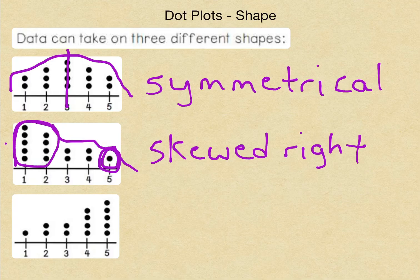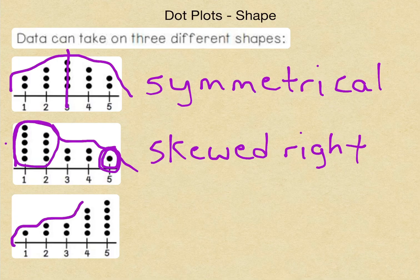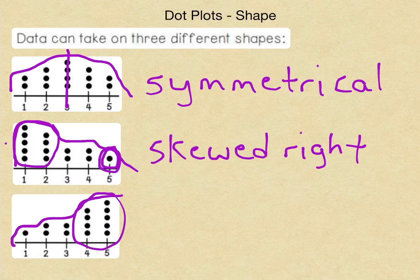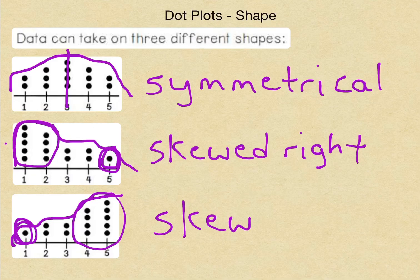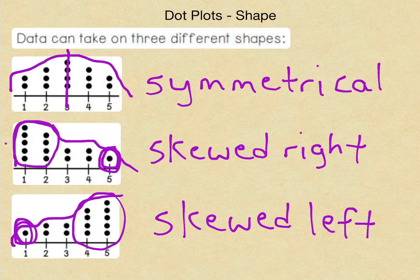Now, our bottom one is actually the opposite of that top one. When we trace around here, we actually start with our tail. And then we get to the majority of our points, which are on the right side. So that means this one over here on the left has skewed our data left. So this data has skewed left.